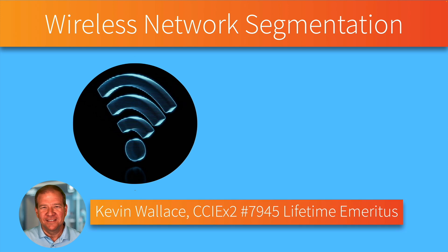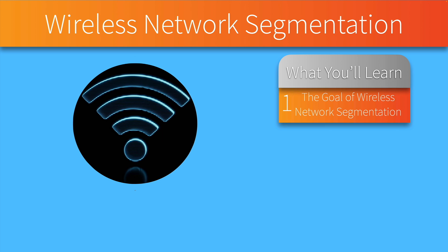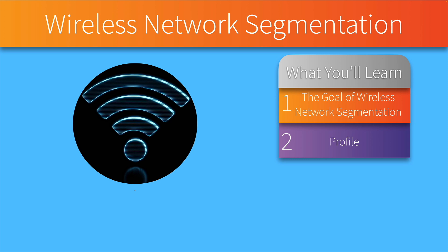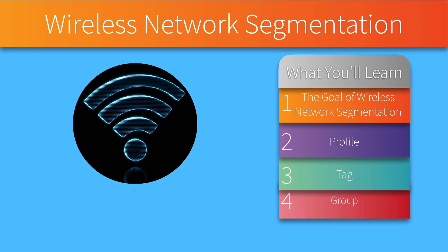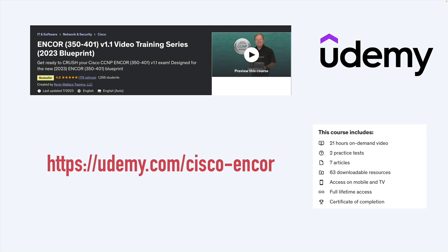Hi, my name is Kevin Wallace, and in this video we're going to take a look at the goal of wireless network segmentation, and then look at three pieces of the puzzle: a profile, a tag, and a group. This video is a sample from my Encore video training series available on Udemy, based on version 1.1 of the Encore Blueprint, at udemy.com/cisco-encore — note there is no E at the end of Encore.